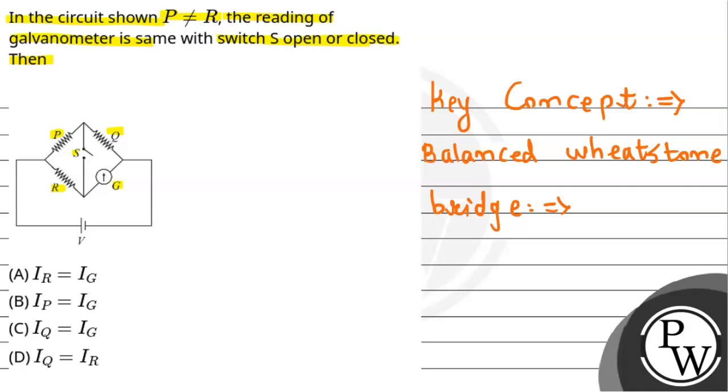In this method, four resistances are connected in a bridge configuration. Between the key points, we can join a galvanometer. R and S are the resistances.